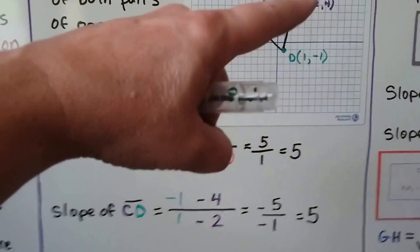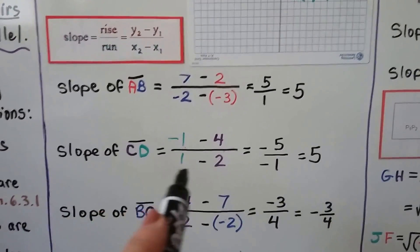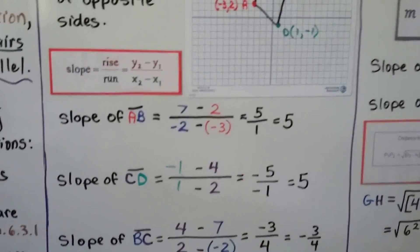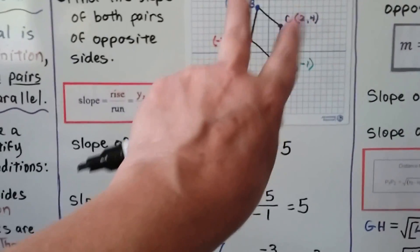And for CD, we do the formula and the math, and it's also a 5. So that tells us, since they have the same slope, that these two are parallel.